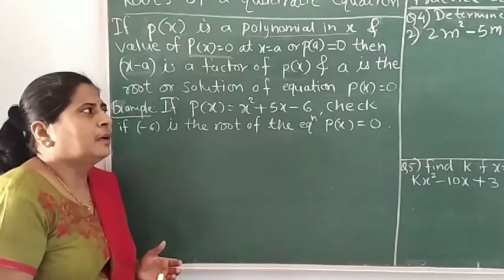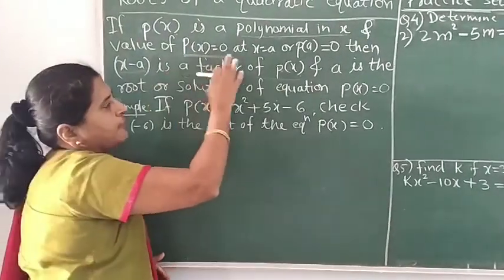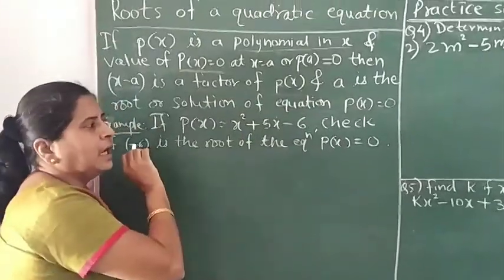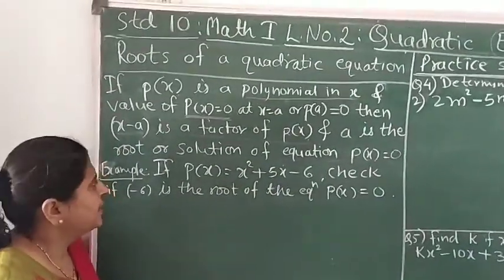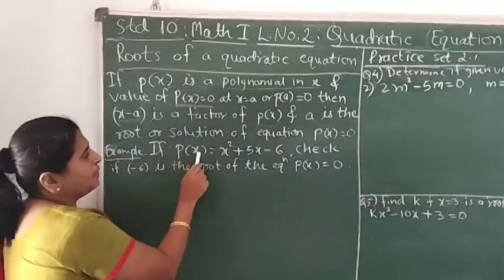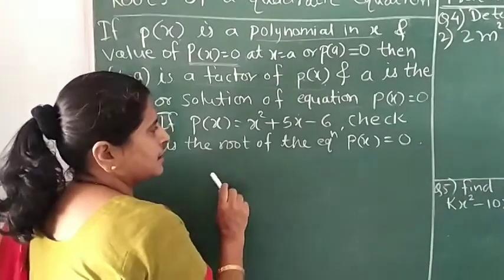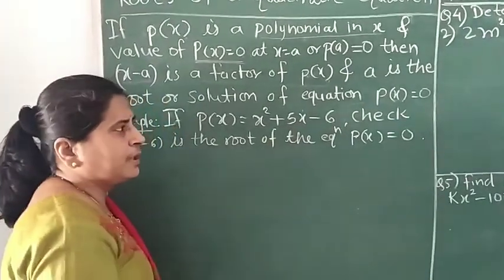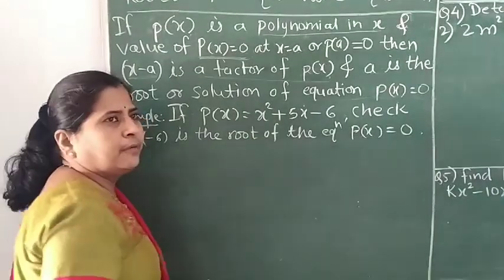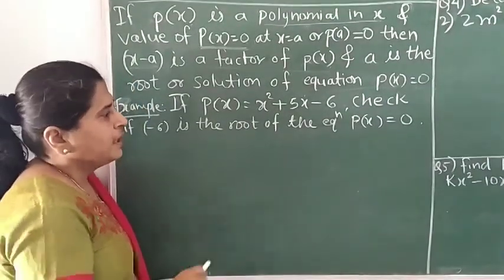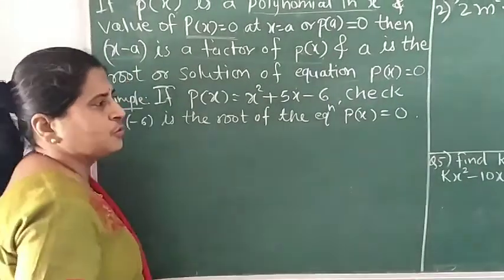You may find this a little bit complicated to understand. Let's take an example to understand it better. If polynomial P(x) is given as x² + 5x − 6, this is a quadratic polynomial in one variable x, with highest degree 2. Check if minus 6 is the root of the equation P(x) = 0.